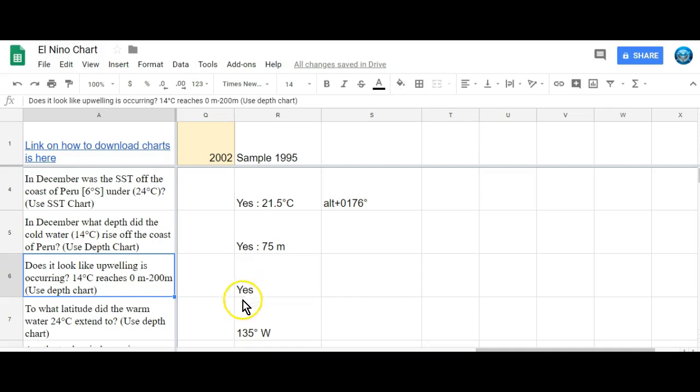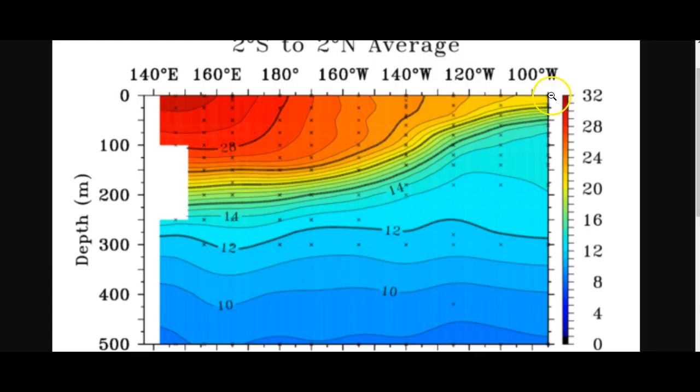Does it look like upwelling is occurring? Basically, it's asking, did that 14 degree Celsius line reach 0 to 200? So did it get between 0 and 200 meters right here? Yes, it's well above 200 meters.